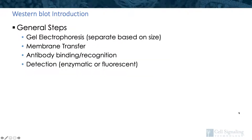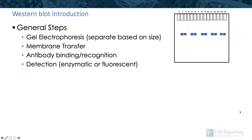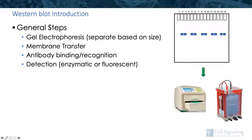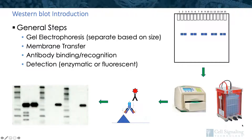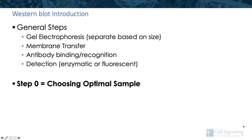Western blot can be summarized in a few steps: gel electrophoresis, followed by protein transfer — either wet, semi-dry, or dry — antibody binding and recognition with the primary antibody and secondary antibody, and finally detection, either enzymatic or fluorescent. These are the basic steps in Western blot, but I'd like to take it back to step zero: choosing the optimal sample for your Western blot experiment.